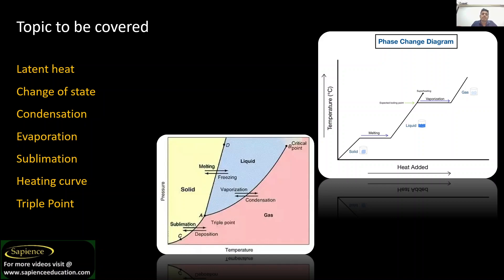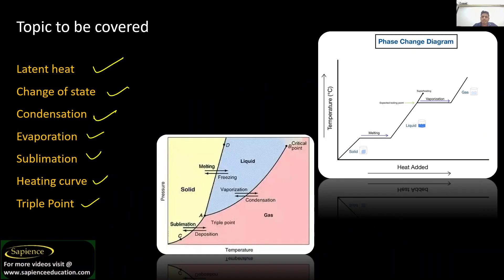Good evening everyone, welcome to Sapience Education. For more details of our institute you can visit our website www.sapienceeducation.com. This is part five of the chapter Thermal Properties of Matter, where I am going to discuss latent heat, change of state, condensation, evaporation, sublimation, heating curve, and triple point.